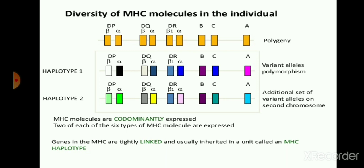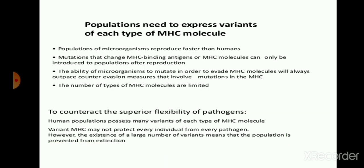Due to this diversity, the transplantation process is also affected. The population needs to express variants of each type of MHC molecule. Because microorganisms reproduce faster than humans, mutations that change the MHC binding antigen can be introduced to populations after reproduction. The ability of microorganisms to mutate to evade MHC molecules will always outpace counter-invention measures involving mutation in the MHC. The number of types of MHC molecules is limited in human beings because different kinds of microorganisms are present in the environment with great reproductive ability.